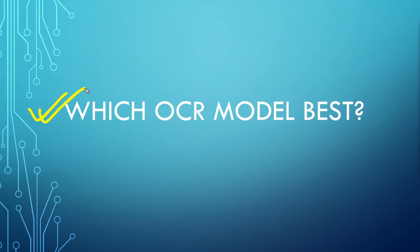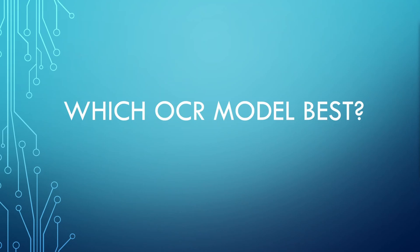The first question is: what is OCR? Basically, OCR is Optical Character Recognition. This model is trained to recognize text information from images, scanned documents, or other visual sources. OCR models use pattern recognition algorithms to interpret the visual data and convert it into machine-readable text.